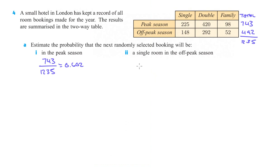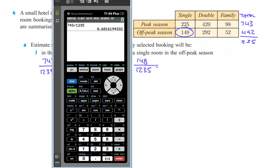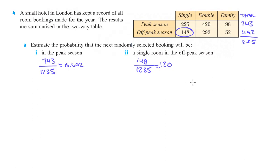Estimate the probability that the next randomly selected booking will be a single room in the off-peak season. We're still selecting from the 1,235 total bookings. Single off-peak is 148. So 148 divided by 1,235 gives us 11.98, which is about 12%. Those are the problems chosen for the 10B assignment. If you have any further questions, please feel free to ask. Thanks.